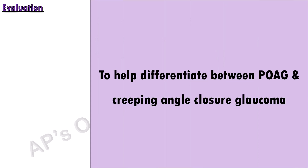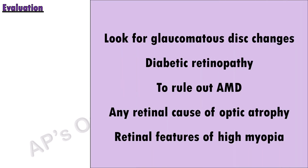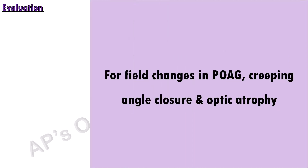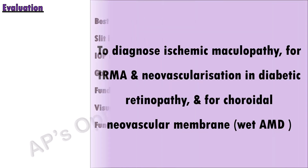Intraocular pressure measurement helps diagnose primary open-angle glaucoma and creeping angle closure. Gonioscopy helps differentiate between primary open-angle glaucoma and creeping angle closure. Fundus fluorescein angiography is used to diagnose ischemic maculopathy, neovascularization in diabetic retinopathy, and choroidal neovascular membrane in wet age-related macular degeneration.